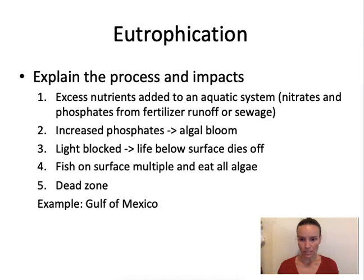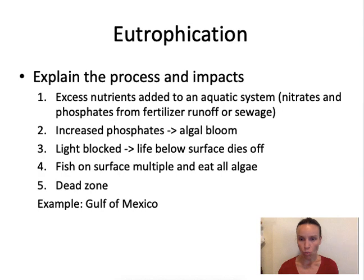The first problem we'll go over is eutrophication. This came up a lot on the exam two years ago in May, and there's always some kind of question either about the process or using it as an example of humans impacting the environment. It's easy to explain quickly if you understand what it is. The basic overview: it's caused by an excess of nitrates or phosphates in the water. The most common cause is human-produced fertilizers washing off into water sources, but you also see it with increased sewage runoff in densely populated cities without good sewage management systems.